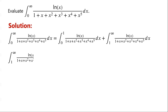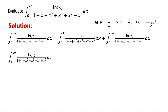Next we consider the integral from 1 to infinity. We let y equal 1 over x. Then x equals 1 over y, and dx equals negative 1 over y squared dy. When x varies from 1 to infinity, y varies from 1 to 0.